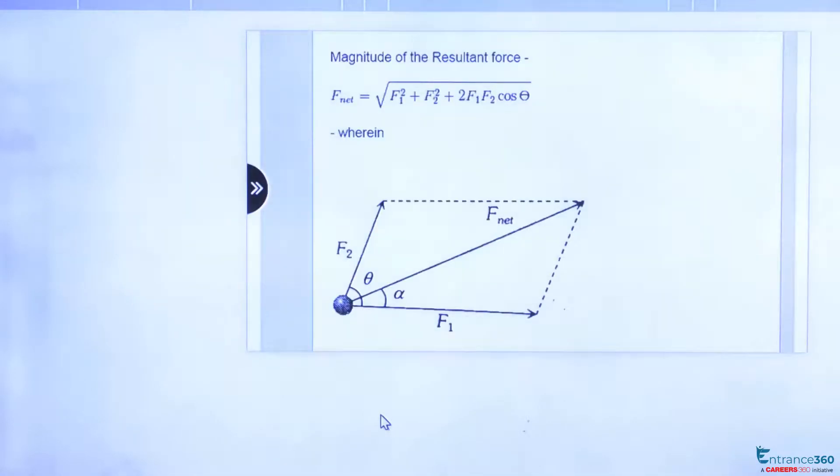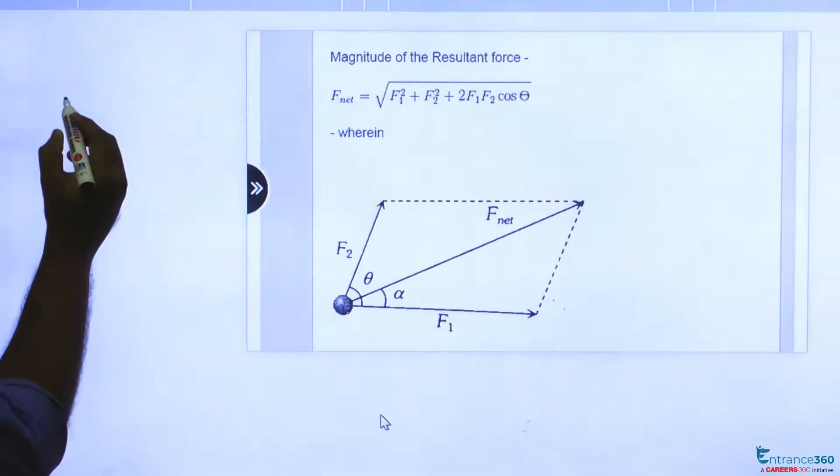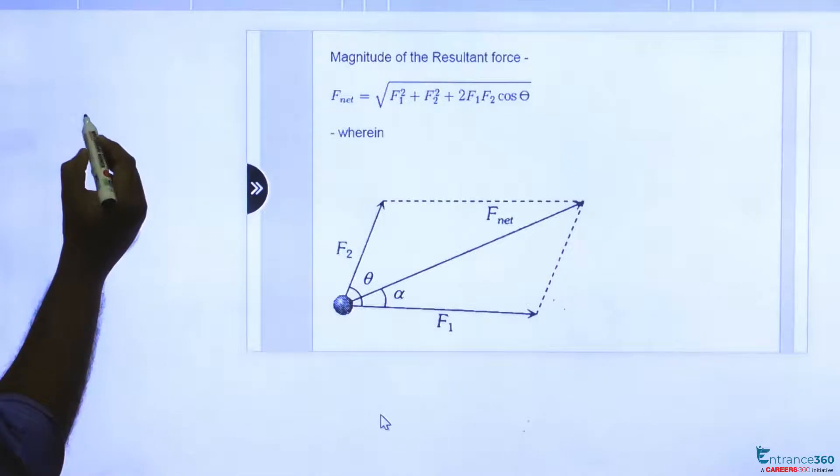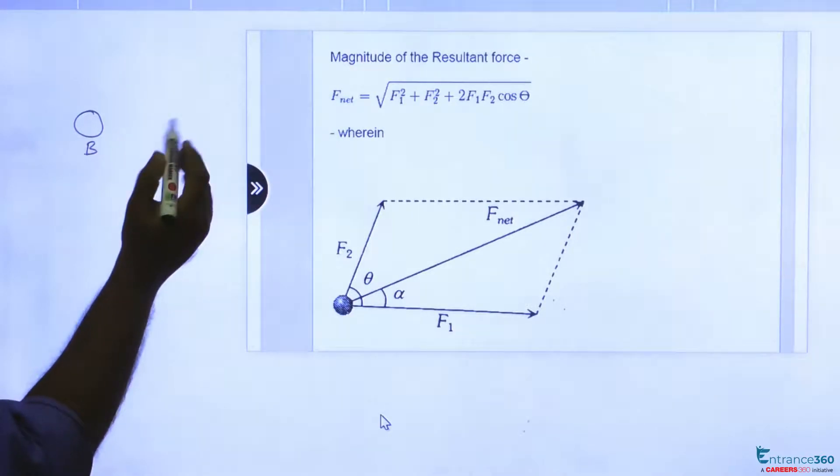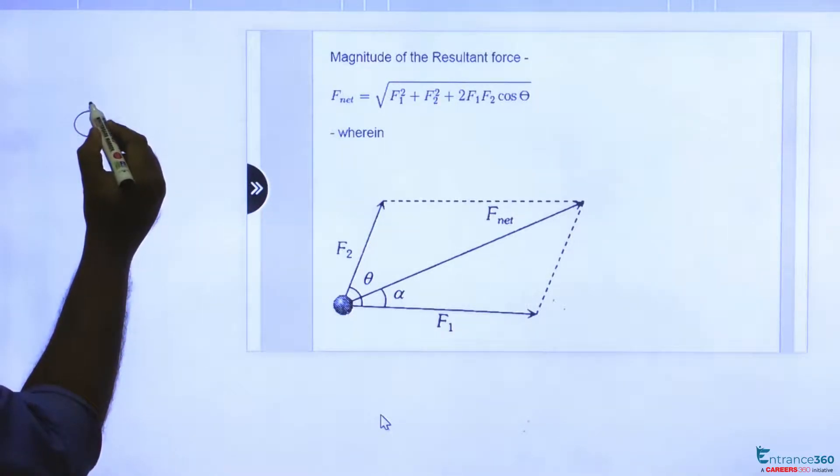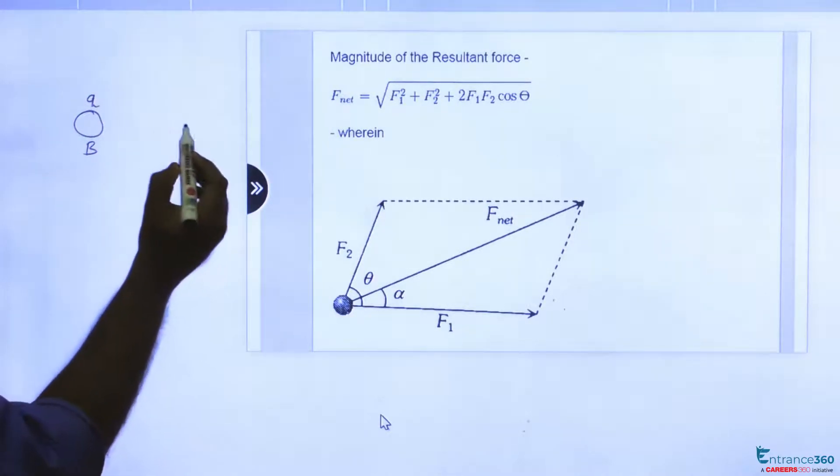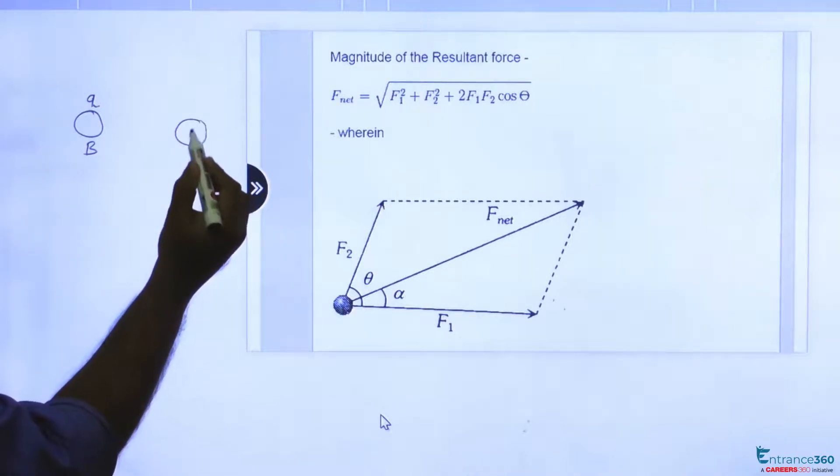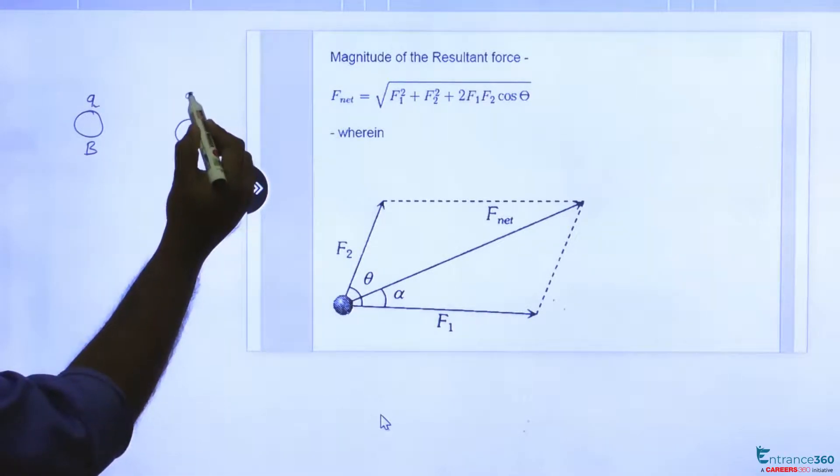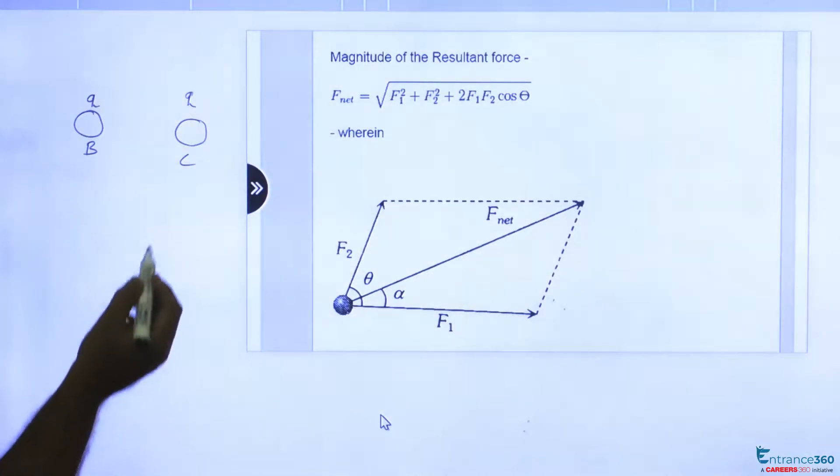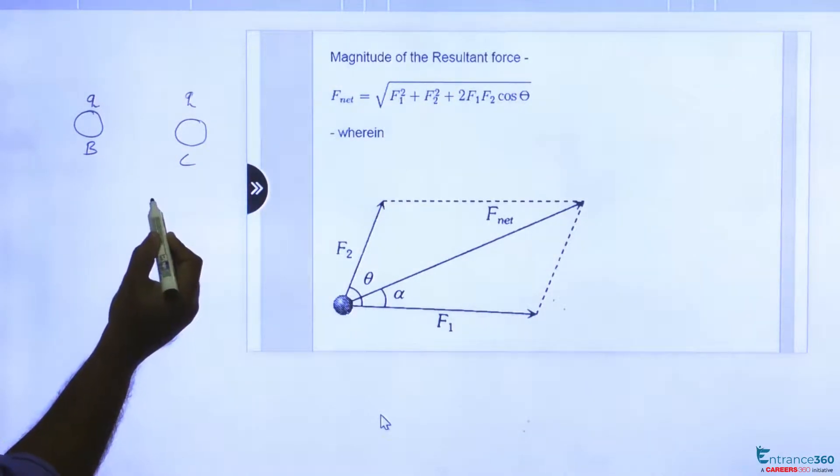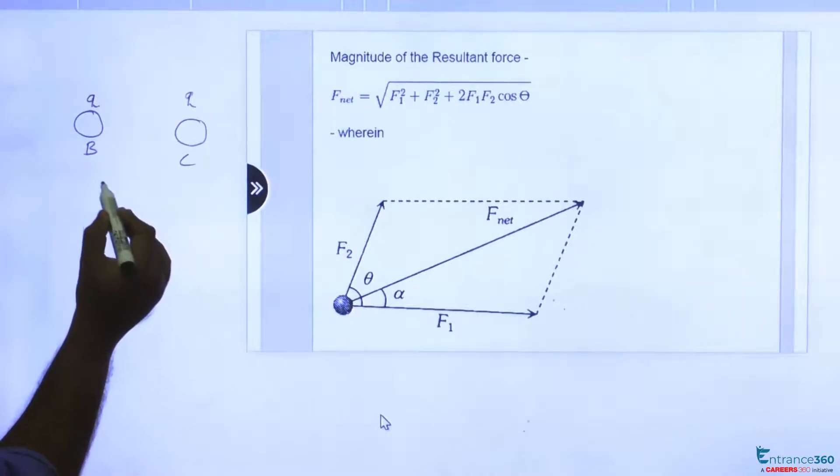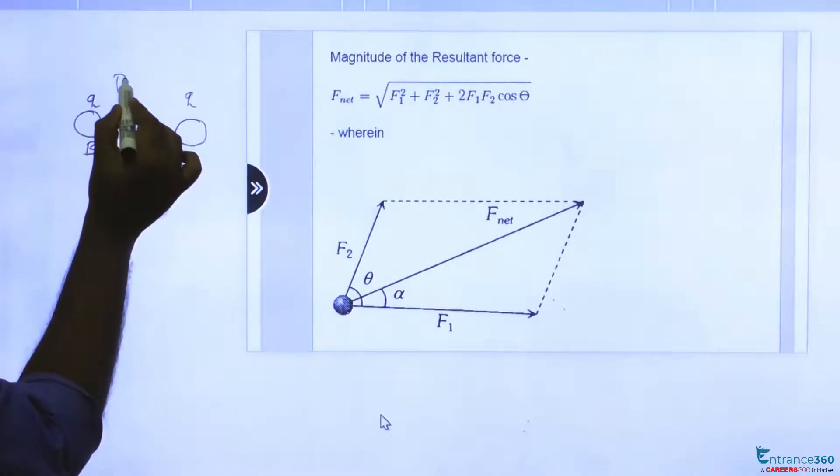So how to solve this question? As per the question we have a spherical body B with charge Q. Let's assume the charge as Q, and C also has same radius and charge Q. Another conductor which is uncharged, let's say P, is brought in contact with B first.